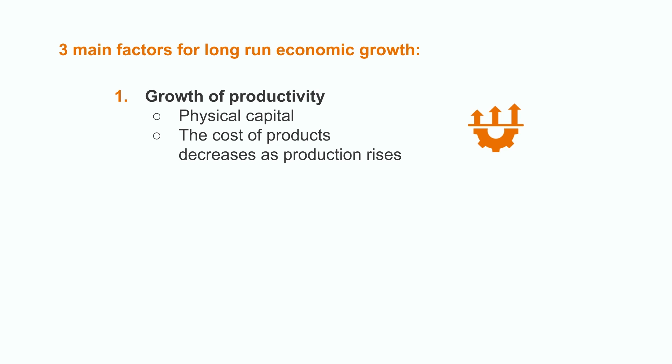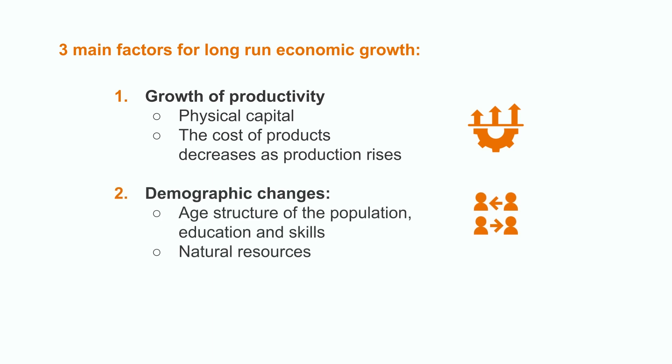First of all, growth of productivity. It is associated to the availability of physical capital or the fact that the cost of products decreases as production rises — in other words, the optimization or minimization of the costs related to the inputs. Secondly, demographic changes. The population structure can be crucial. For example, a higher educated population can lead to higher industrialization and higher GDP. It is also important to keep in mind the ratio between demographic growth and the availability of natural resources. Finally, the labor force participation or the size of its workforce.